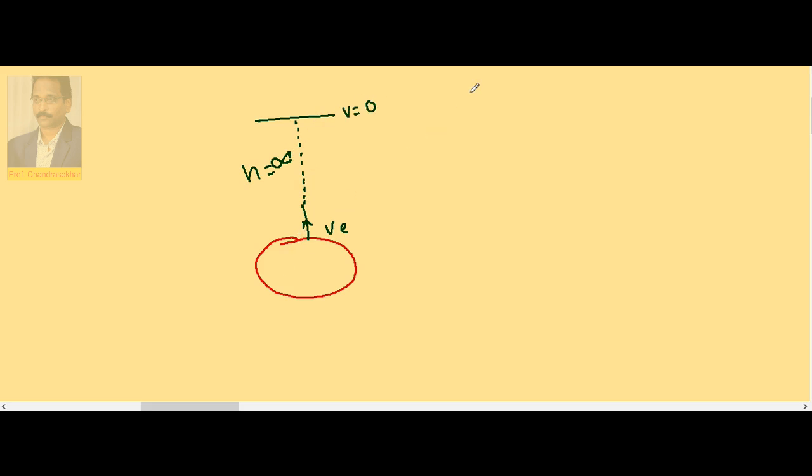But now in the problem here, we are giving a velocity which is greater than the escape velocity. So body is projected up with 3v_e. Then at the same point, the infinite point, what is the possible velocity here?